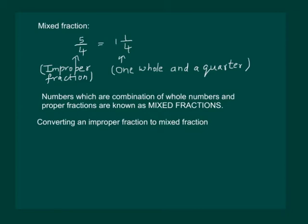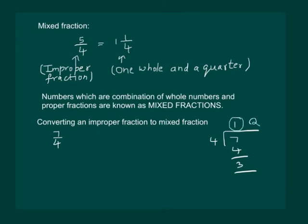Let us also recall the conversion of an improper fraction to a mixed fraction. Consider an improper fraction, say 7 by 4. Divide the numerator by the denominator. We know that 1 is the quotient and 3 is the remainder. Then 7 by 4 can be written as 1 and 3 by 4, which means the quotient 1 gives the whole number, the remainder 3 is the numerator of the fraction, and the denominator remains the same.